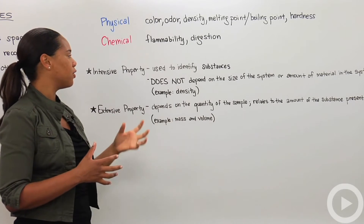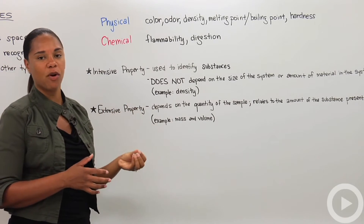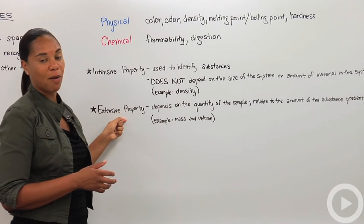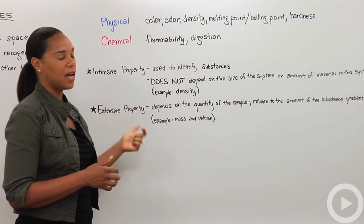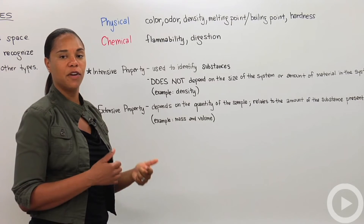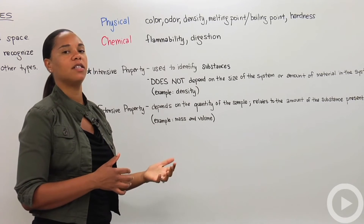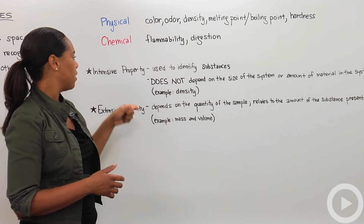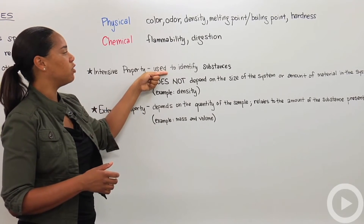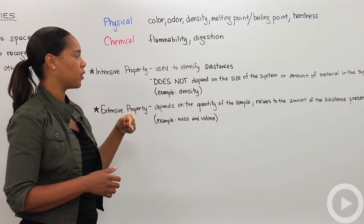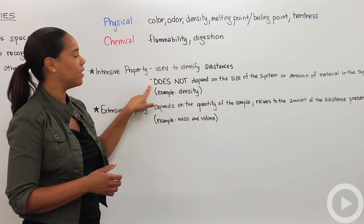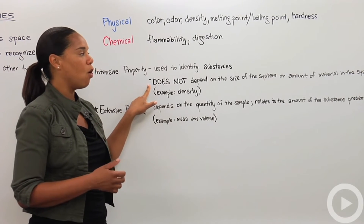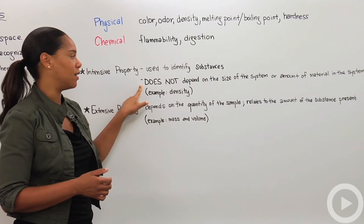Within physical and chemical properties of matter, there are two other types of properties that are important to note as well: intensive and extensive properties. Again, it will take some time to figure out how to distinguish between what's an intensive property and what's an extensive property. An intensive property is used to identify a substance, and importantly, it does not depend on the size of the system or the amount of material in the system.